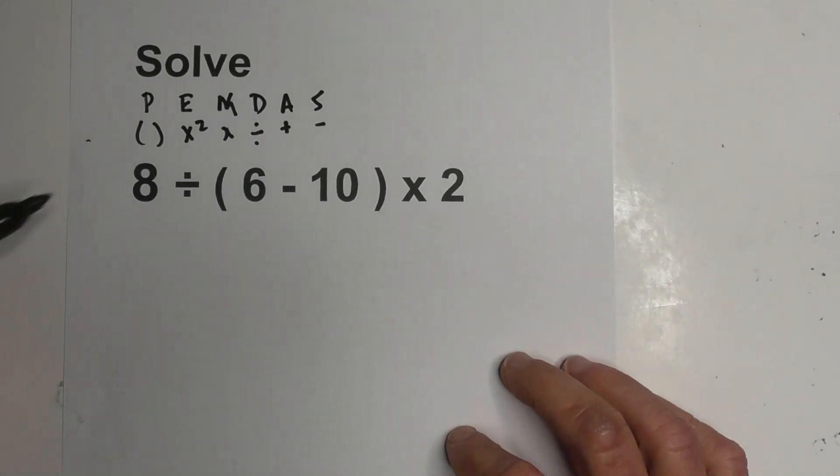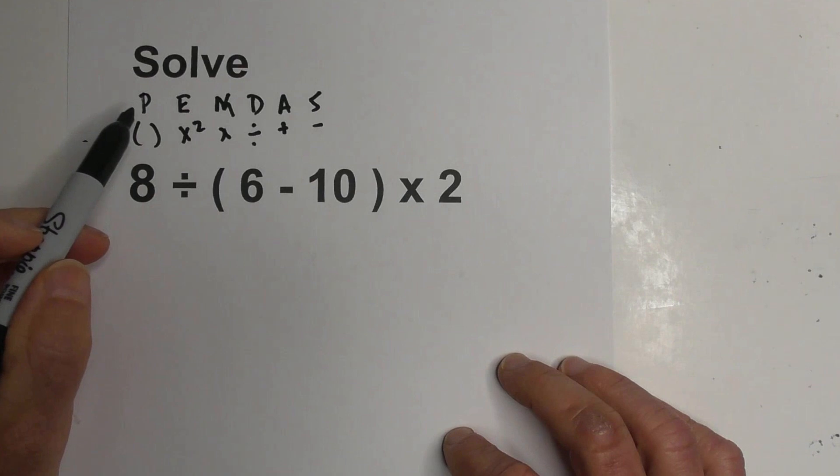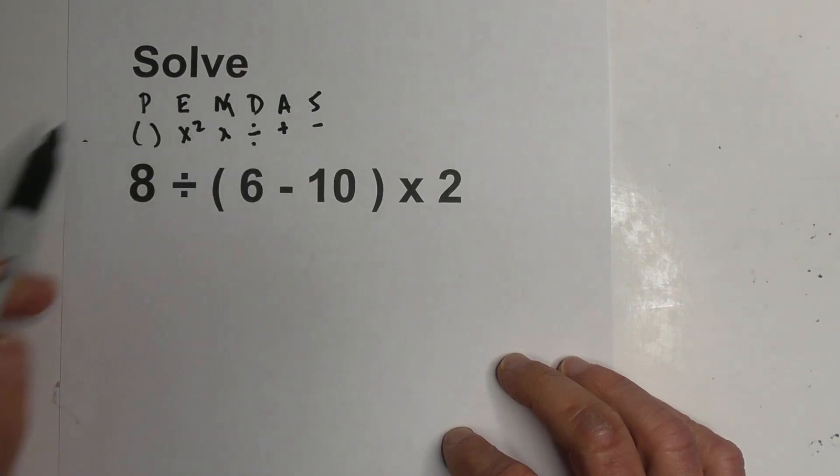So now let's go ahead and apply the rules of the order of operations using PEMDAS. So let's start with parentheses. Do we have a parentheses? Yes. So let's go ahead and start there.